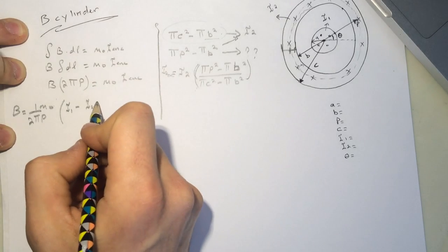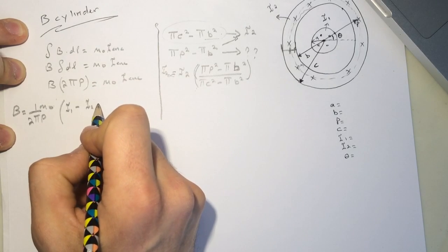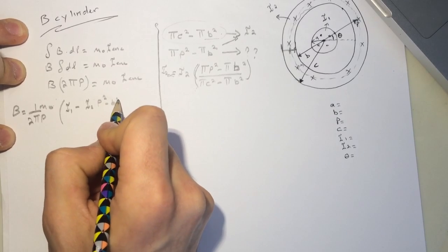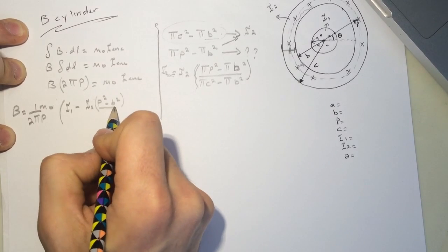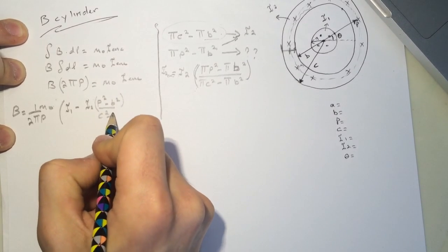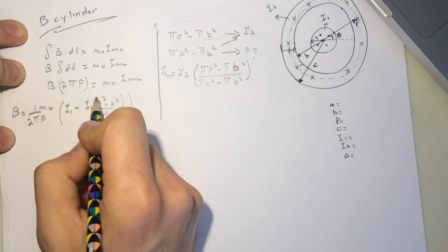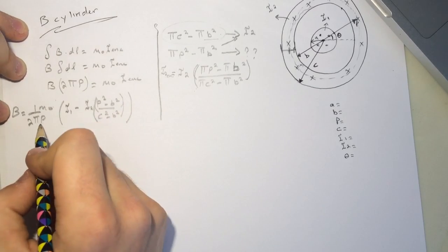Then we can drop the pi here. So it's p squared minus b squared divided by c squared minus b squared.